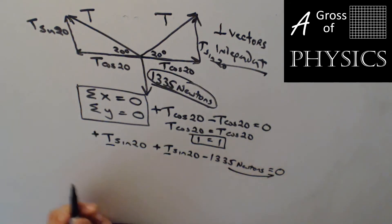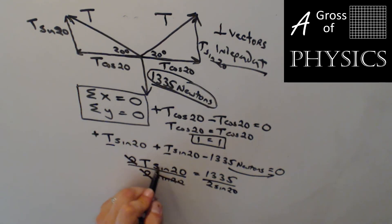I'm going to bring this newtons over to the other side because I don't like the negative and I'm going to combine the two t terms. 2t sine 20 because there's two of them equals 1335. Now I need to divide by 2 sine 20. 2s cancel. The sine 20s cancel.